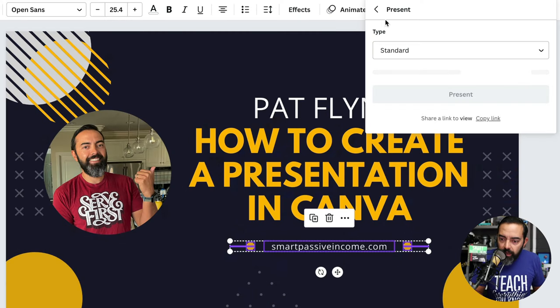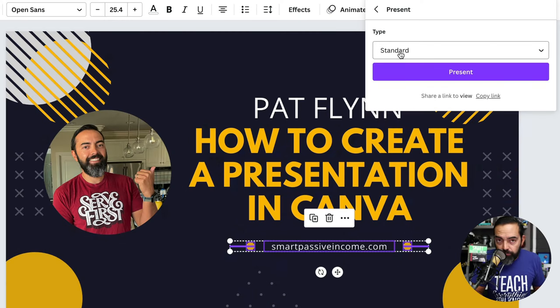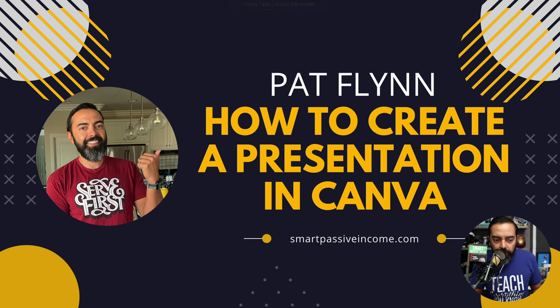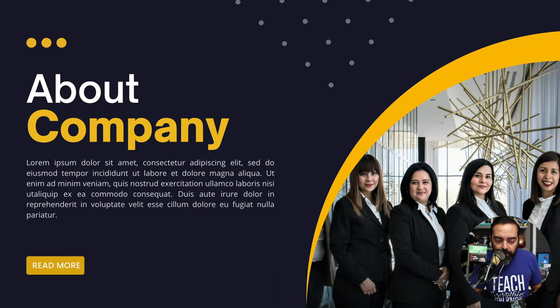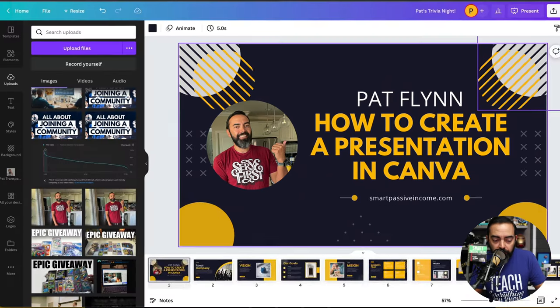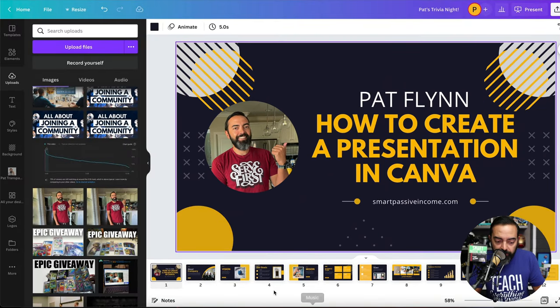Now if I want to see what this looks like at full screen, I go to Present and hit 'Present' — keeping it on Standard for now. Full screen — if I hit the next button it moves to the next slide, and I can go back using the back arrow. We still have to make some changes — for example, this stock image of these women.